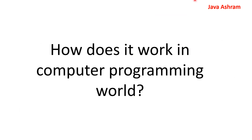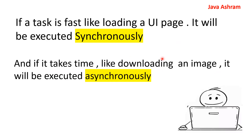So how does this work in the computer programming world? How do synchronous and asynchronous work in computer programming? If a task is fast, like loading a UI page, it will be executed synchronously. Only one task will be done at a time.